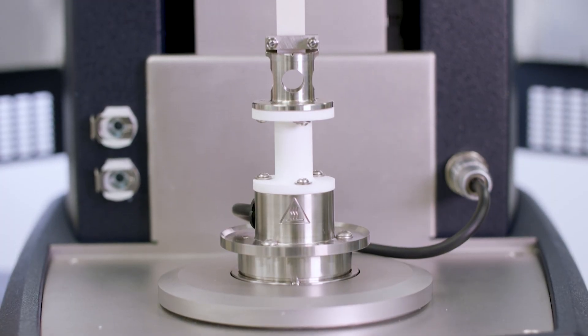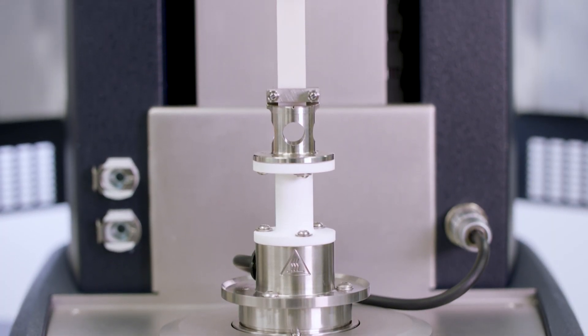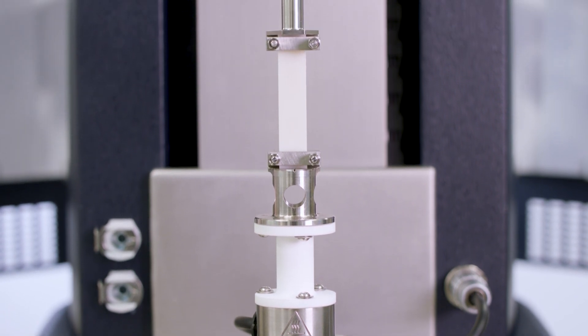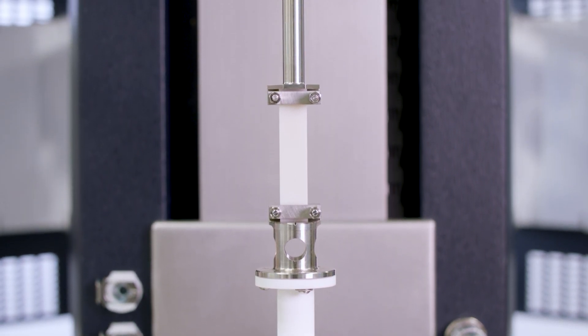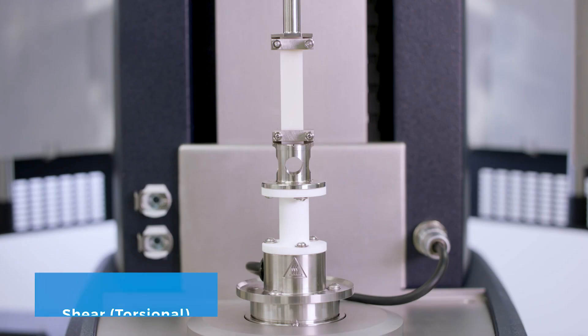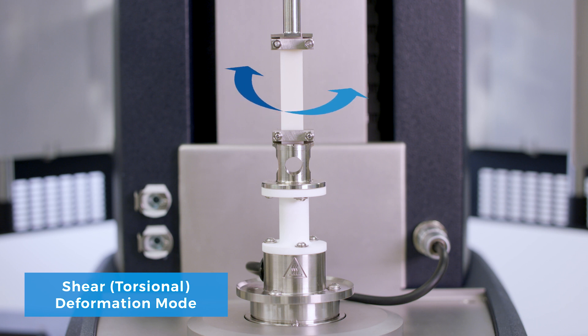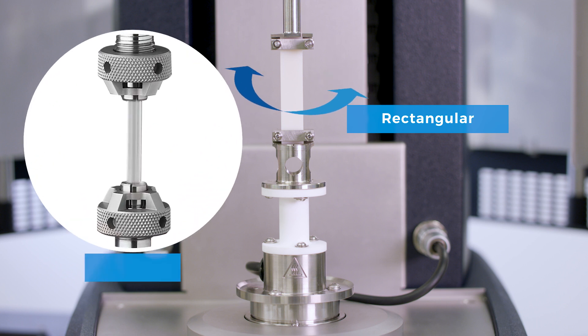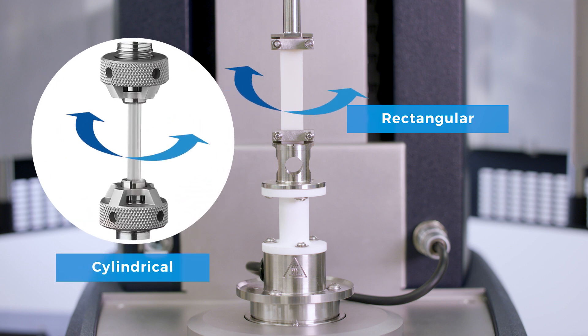First of all, if you are working with medium to high stiffness thermoplastic or thermosetting polymeric materials, traditionally this kind of samples are studied under shear deformation or torsional deformation mode using a torsional geometry. The Discovery Hybrid Rheometer can perform torsional tests on samples with either rectangular shape or cylindrical shape.